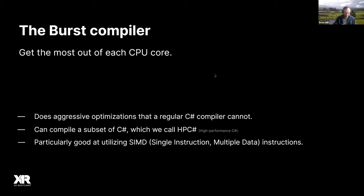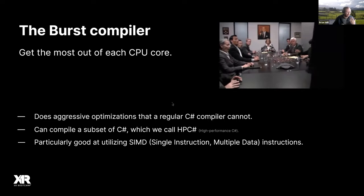The Burst compiler is a C# compiler that does aggressive optimizations that a regular C# compiler cannot. It compiles only code conforming to a subset called HPC# — High Performance C#. The main restriction is you can't use managed objects, which is basically the same requirement for jobs. So most any job you write can be Burst compiled just by adding the BurstCompile attribute. Burst is the closest thing to magic in DOTS — it's essentially free performance without extra work.